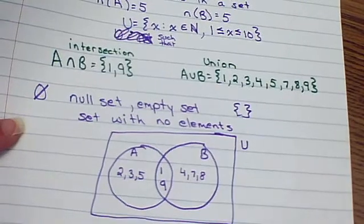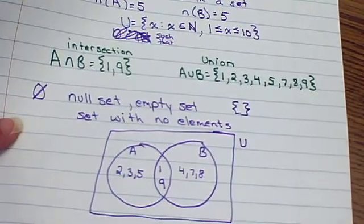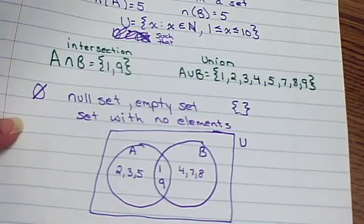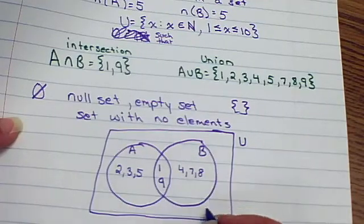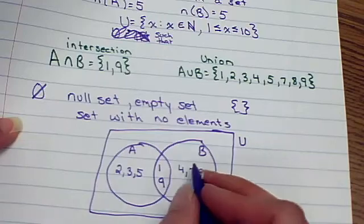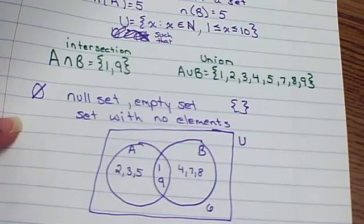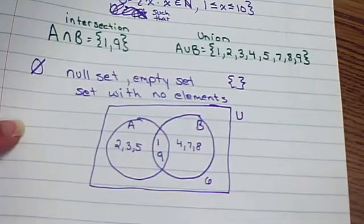Now remember, I just redefined my universal set to be 1 to 10. So what am I missing here? I've got 1, 2, 3, 4, 5, 6 goes out here, 7, 8, 9.